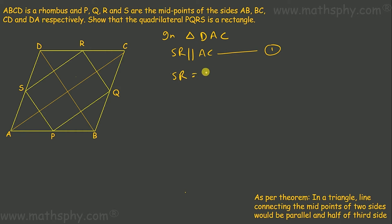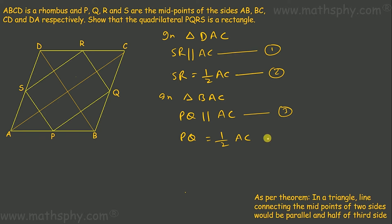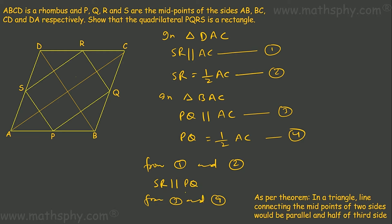SR would be equal to half of AC. In triangle BAC, PQ would be parallel to AC and PQ would be half of AC. From these results, SR parallel to AC and PQ parallel to AC both give SR parallel to PQ. And SR = ½AC with PQ = ½AC gives SR = PQ. This proves PQRS is a parallelogram.